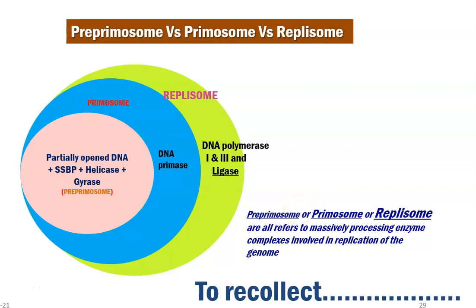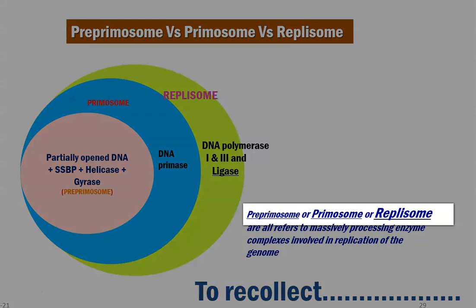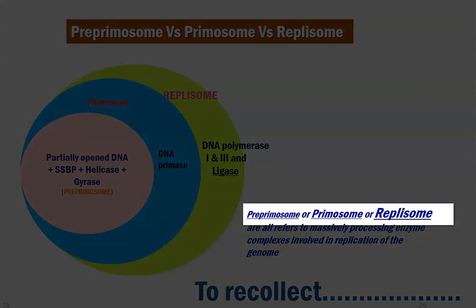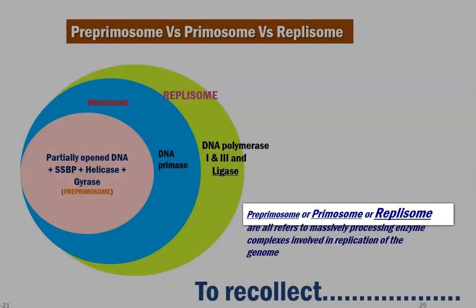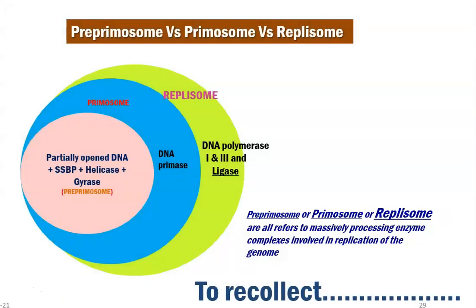Finally, we try to understand the difference between a pre-primosome, primosome, and replisome. These are dimensionally larger molecules shown in the diagram — the pre-primosome shown with small letters whereas the replisome is shown in large size letters. They all refer to massively processing enzyme complexes involved in the process of DNA replication in an organism.